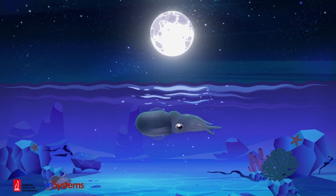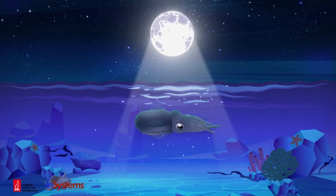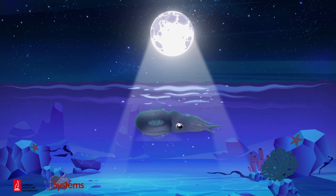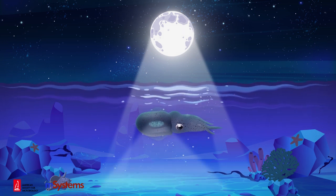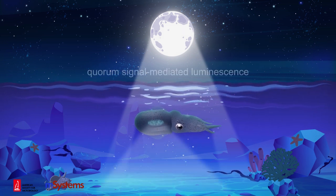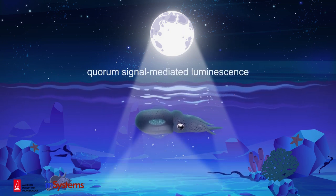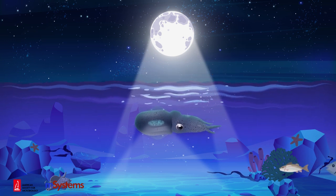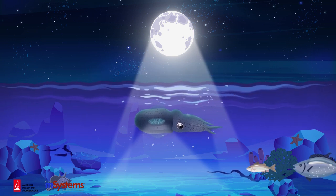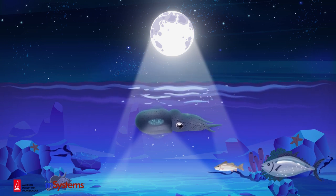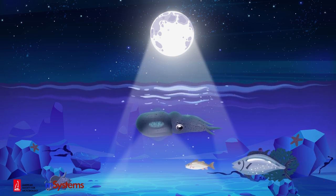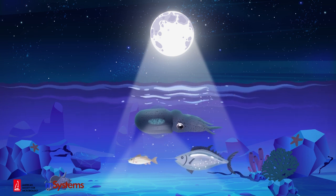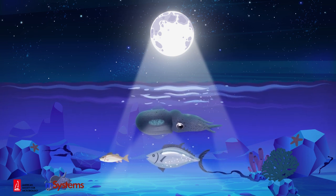Once Vibrio bacteria enter the crypts, they increase in density and foster quorum-signal-mediated luminescence. The glowing bacteria resemble the night sky, thus helping to camouflage the squid from predators underneath.